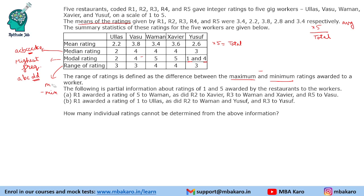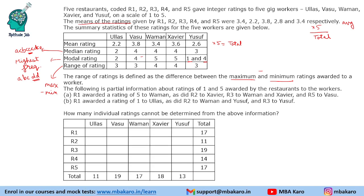So median is the central value, modal is the highest frequency, range is max minus minimum. Based on this data, we need to find out who gave what rating to which person. We will make a table of these restaurants and five people, and multiply averages by 5. For example, if the average is 2.2, multiplying by 5 gives 11; 3.8 into 5 gives 19, and so on.